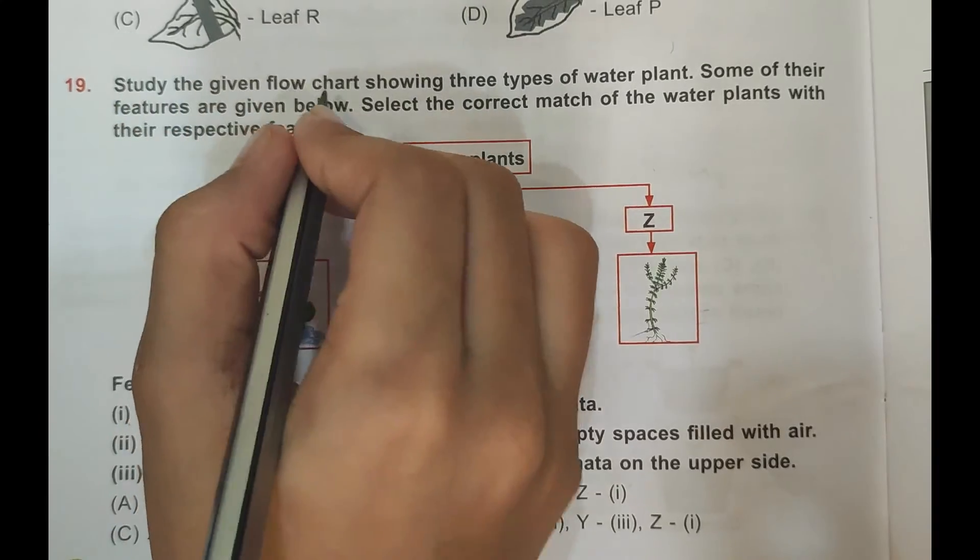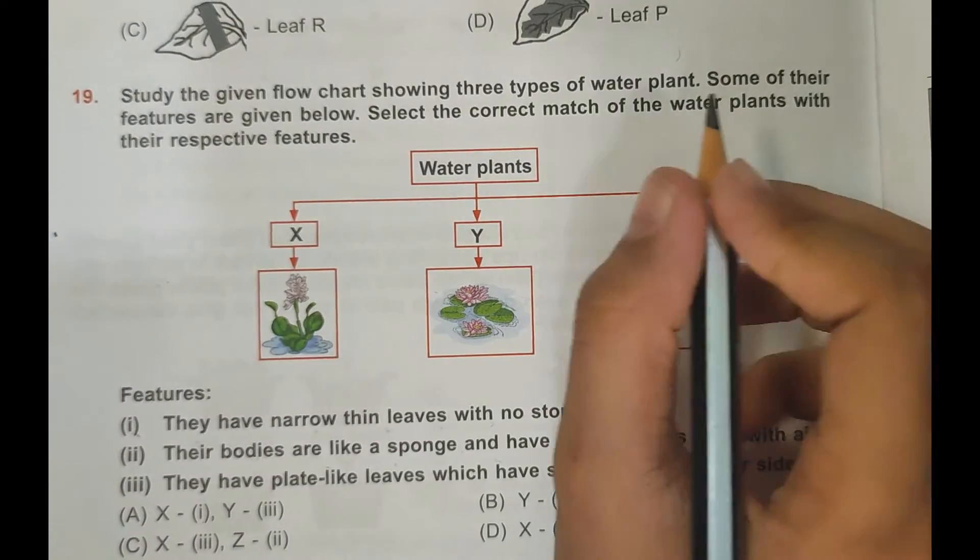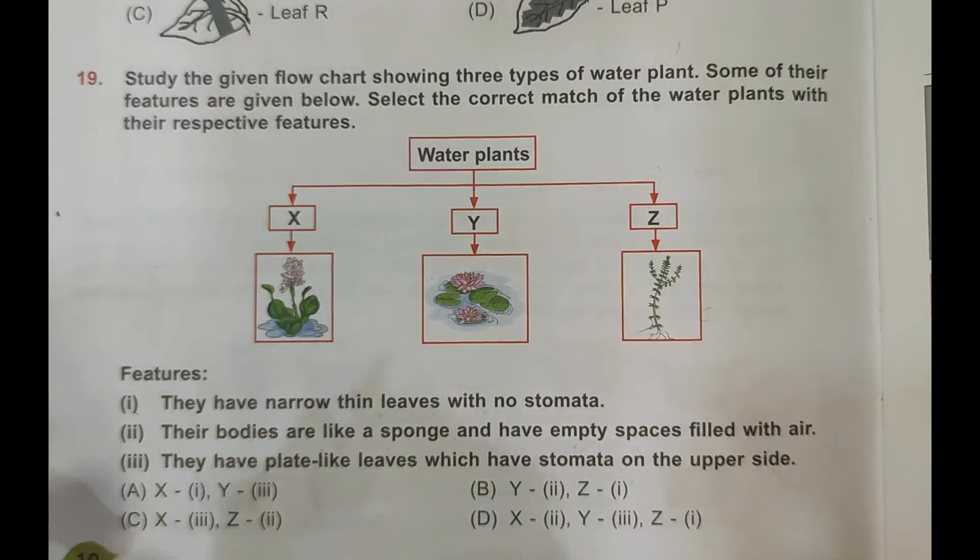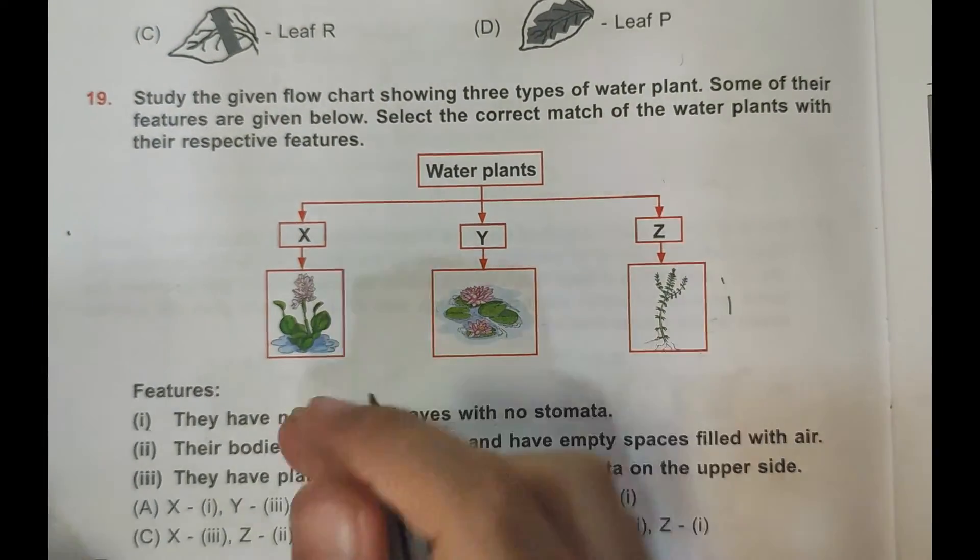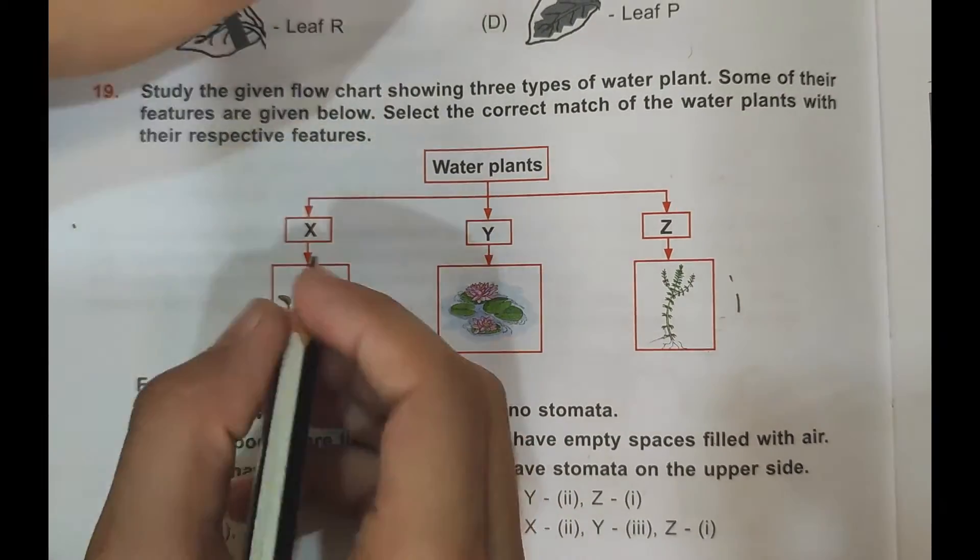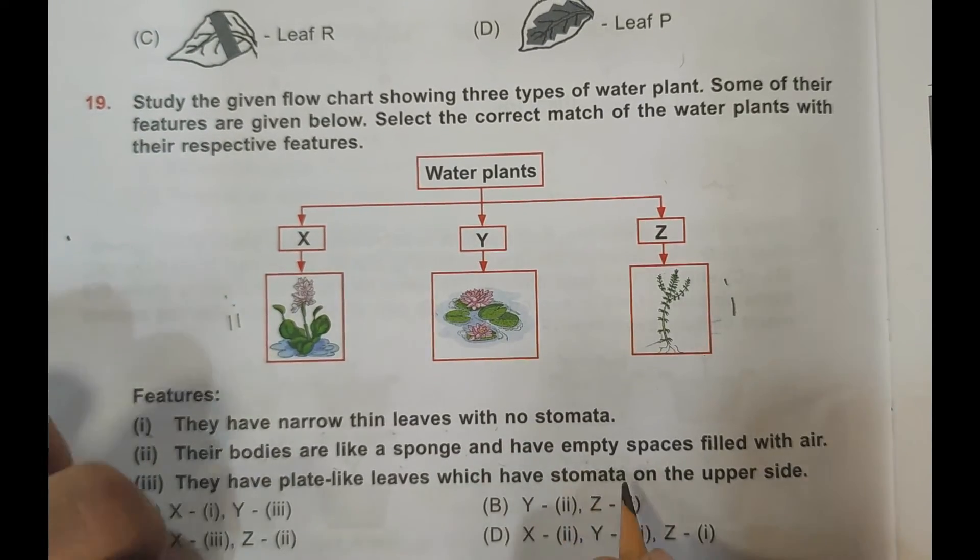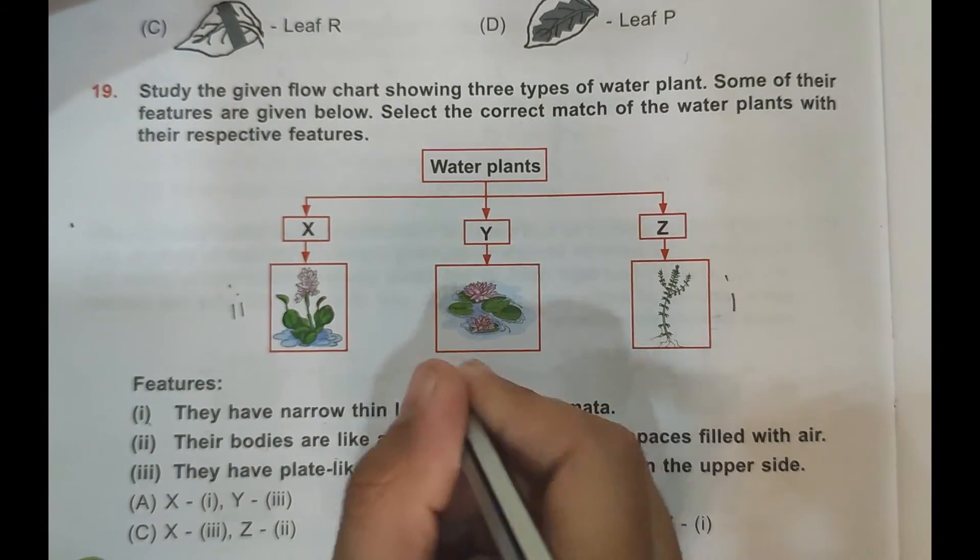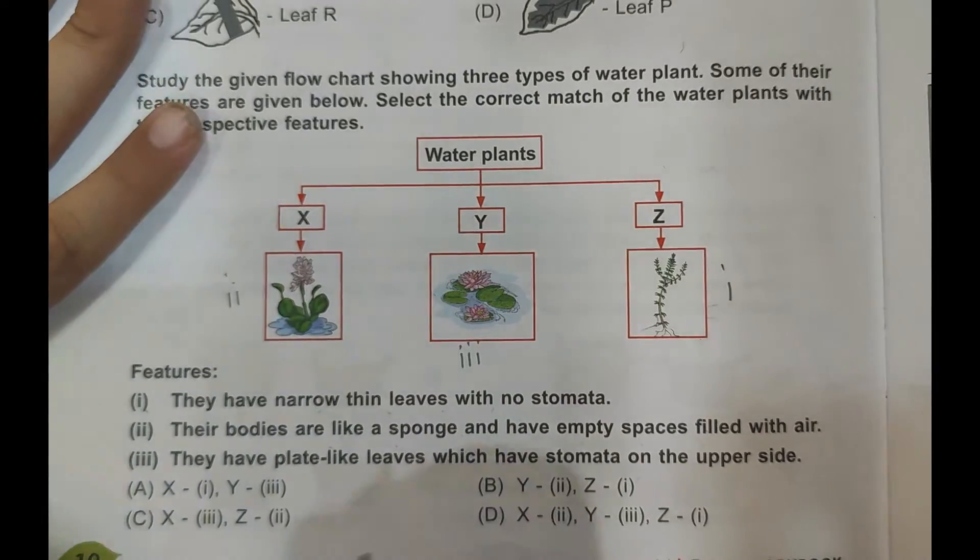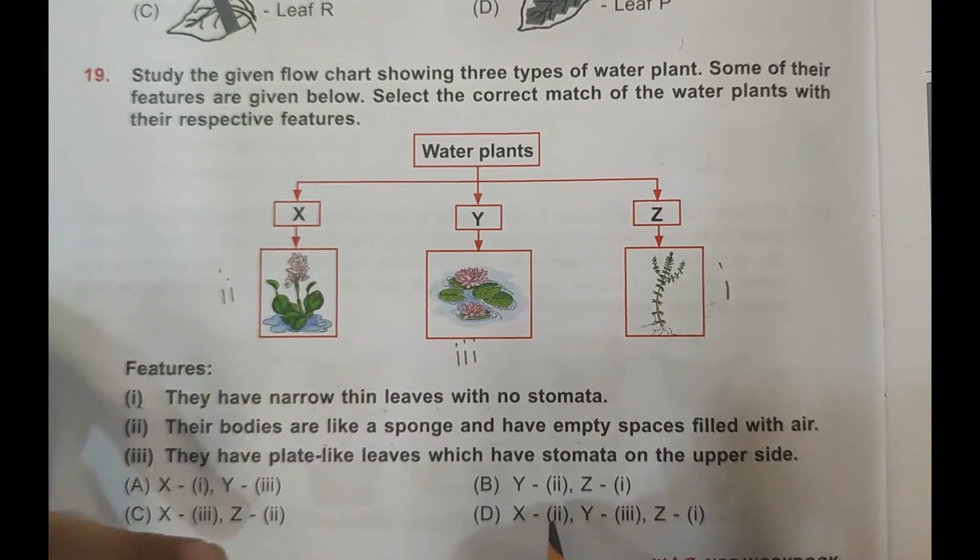Study the given flowchart showing three types of water plants. Some of their features are given below. Select the correct match of the water plants with their respective features. Z is an underwater plant, they have narrow thin leaves with no stomata, so Z is I. Their bodies are like a sponge and have empty spaces filled with air - it is in the floating plants, so this is II. They have plate-like leaves which have stomata on the upper side - this is a fixed plant, so here will be III. So X is II, Y is III, and Z is I. Now let's check: X is I - that's false. Y is II - that's also false. X is III - that's false. Then here X is II, Y is III, and Z is I. So D is the correct answer.